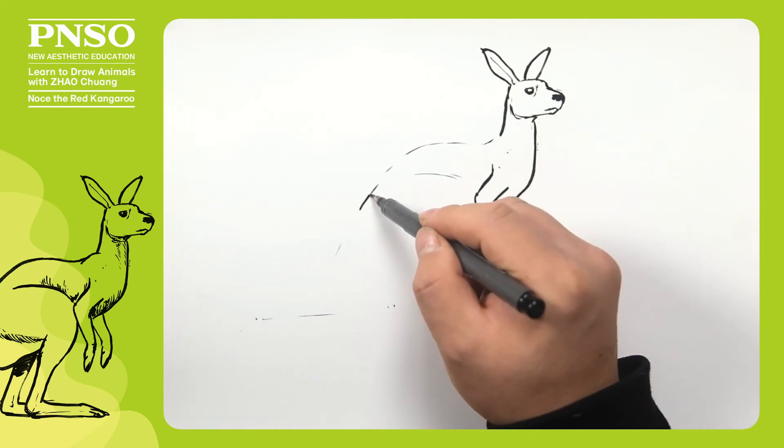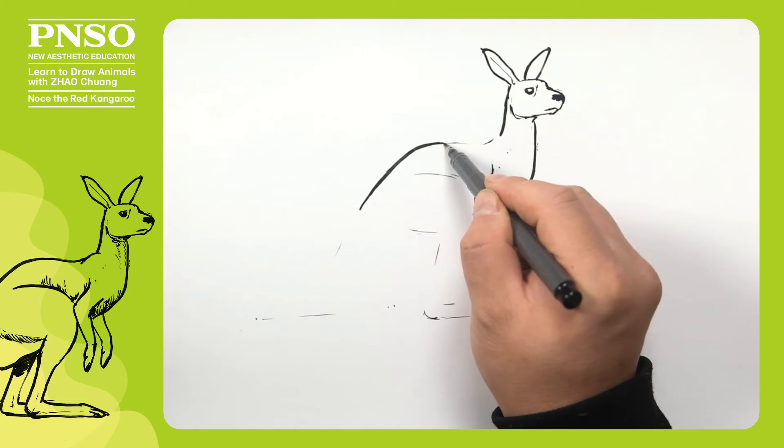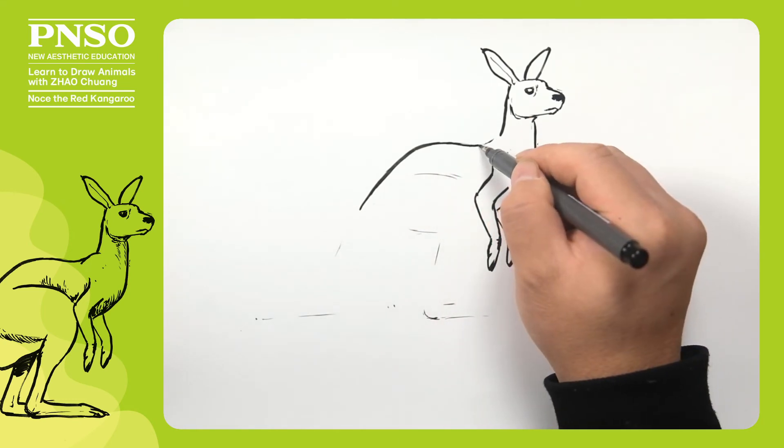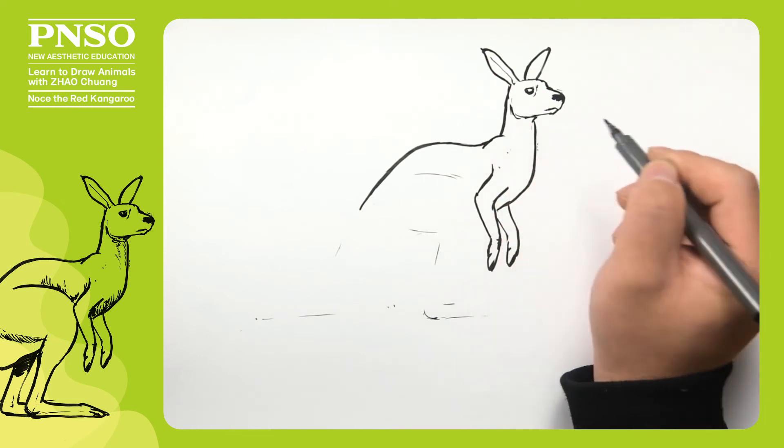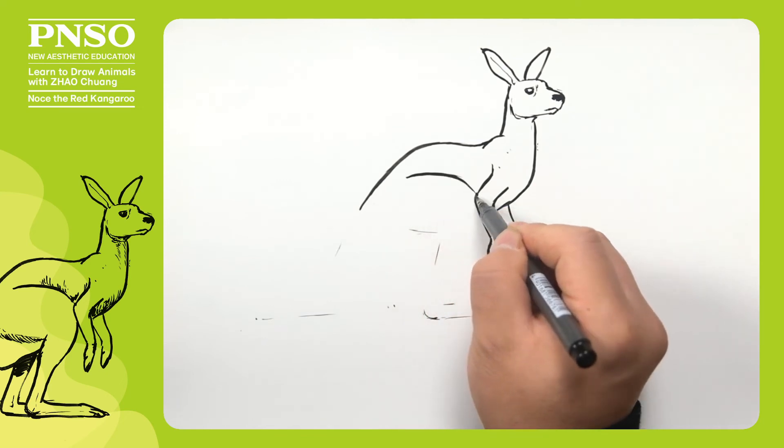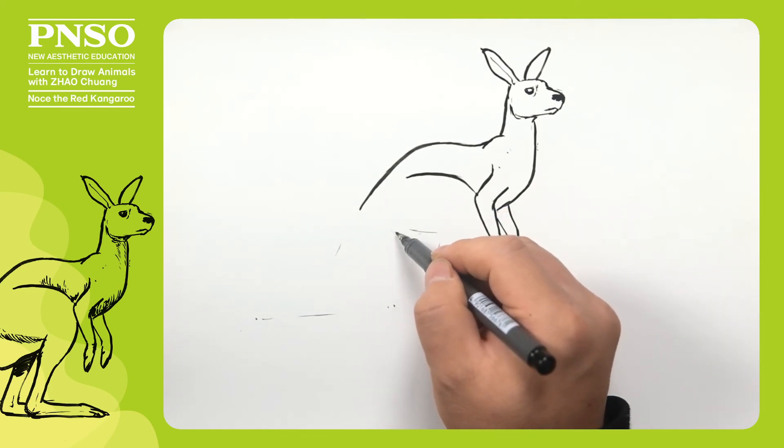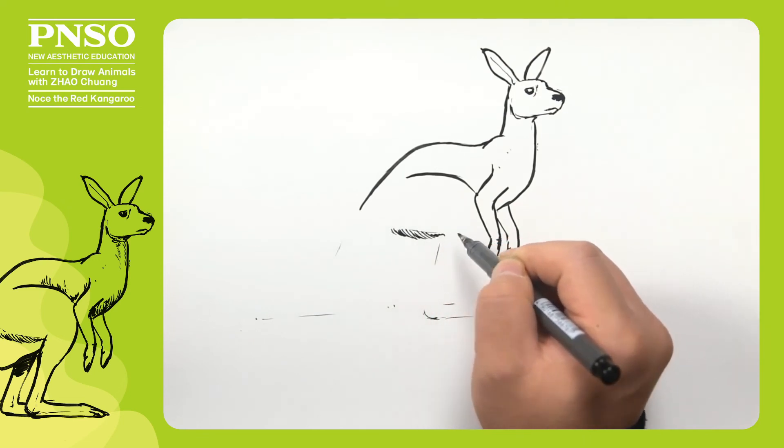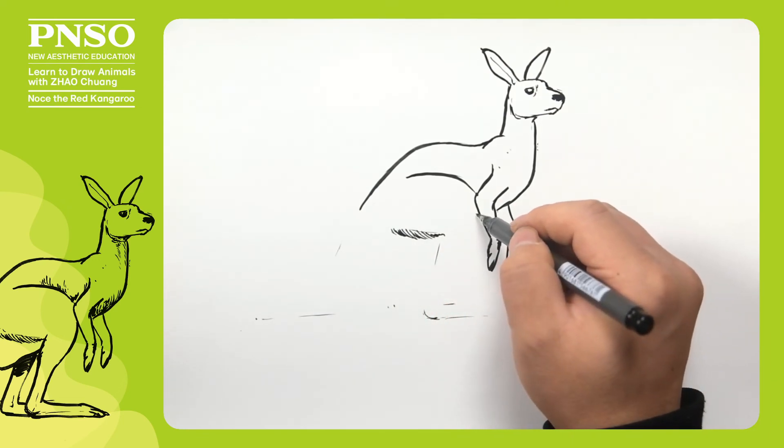After that, let's draw the curve on its back. Make this line coherent. Its shoulders slightly protrude like this. Then let's draw its thick and strong thigh, below which we can draw some fur. The red kangaroo has thick fur.